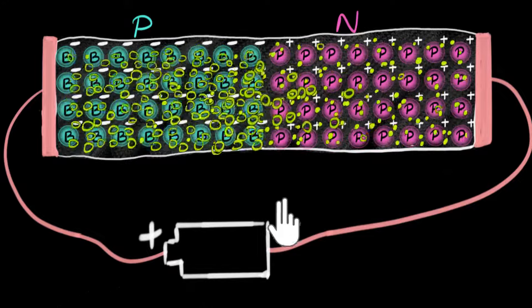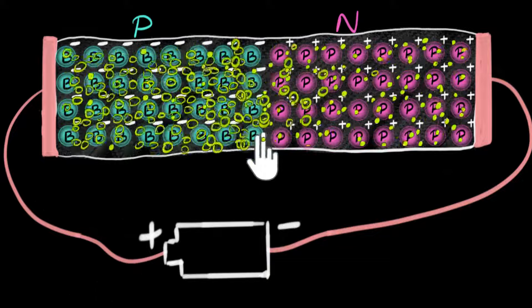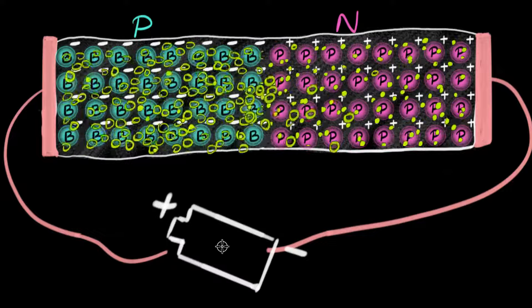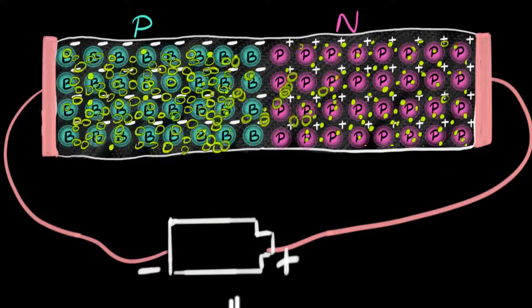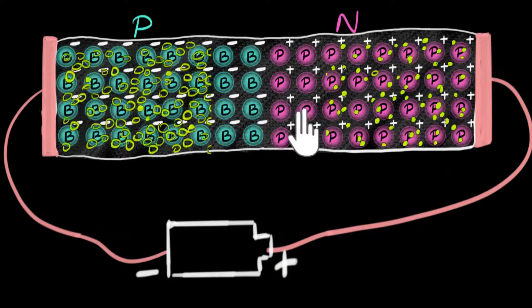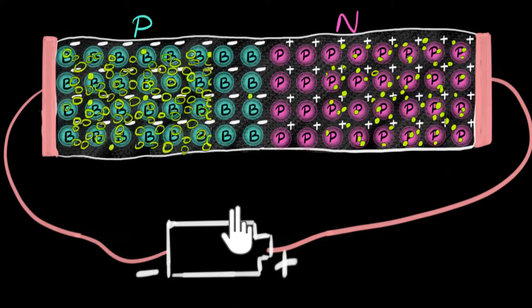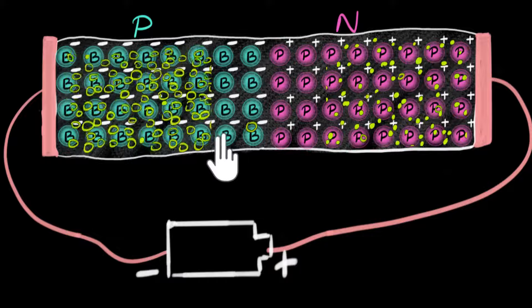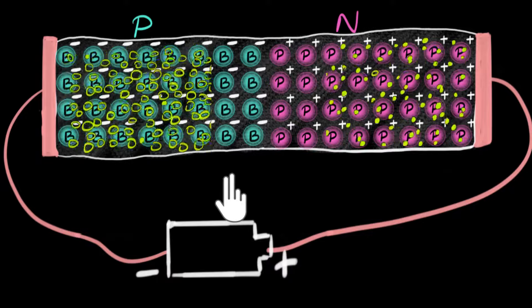In a previous video, we saw that if you forward bias a P-N junction — connecting the positive terminal to the P-type — then the P-N junction conducts current from P to N. But if you reverse bias it, connecting the negative terminal to the P-type, the diode doesn't conduct. A very tiny current flows from N to P due to minority charge carriers, but mostly it doesn't conduct. In this video, we're going to go a little deeper and explore the subtleties of the charge flow mechanism in both forward and reverse bias. This will be extremely important later on to truly understand the mechanism of a transistor.